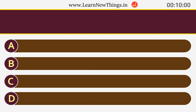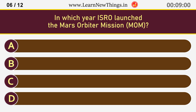In which year did ISRO launch the Mars Orbiter mission? 2013.